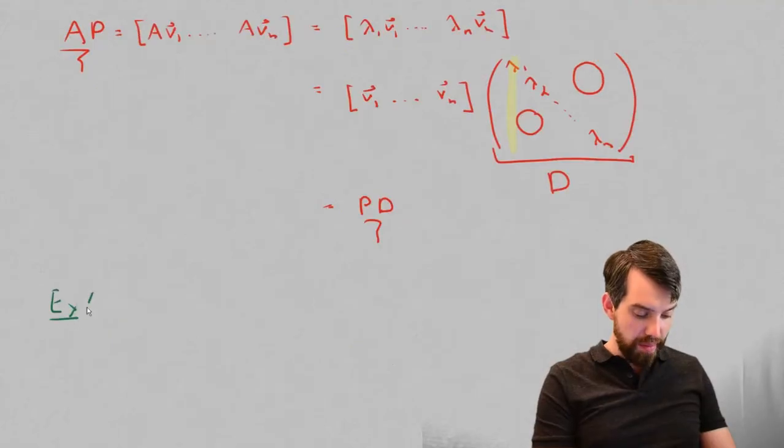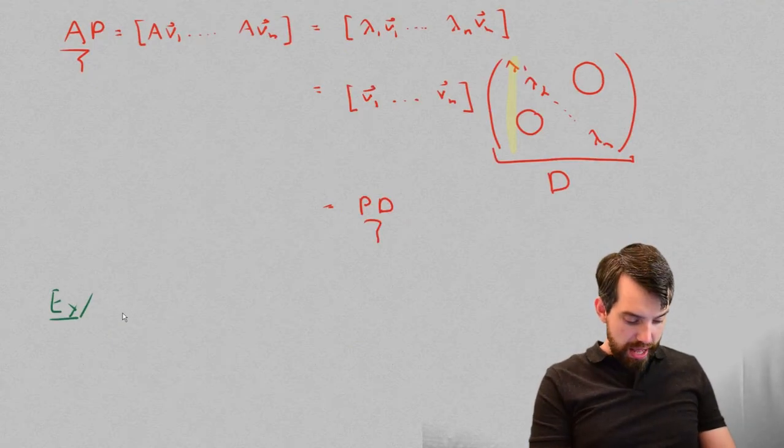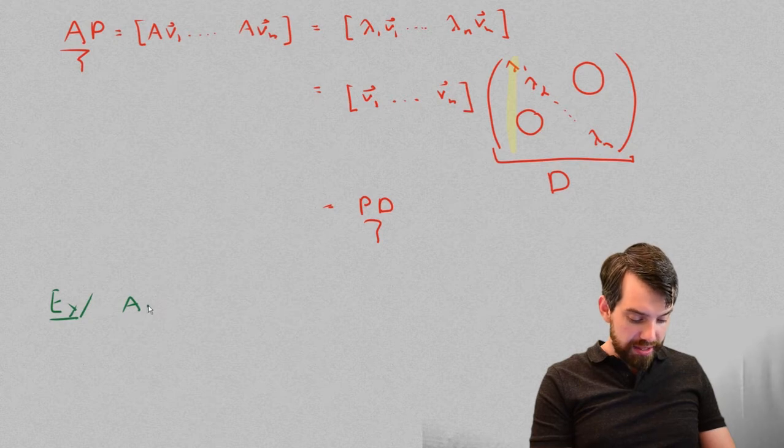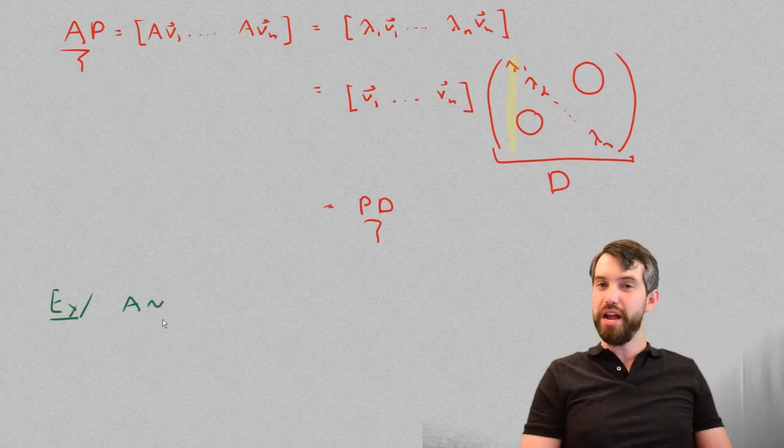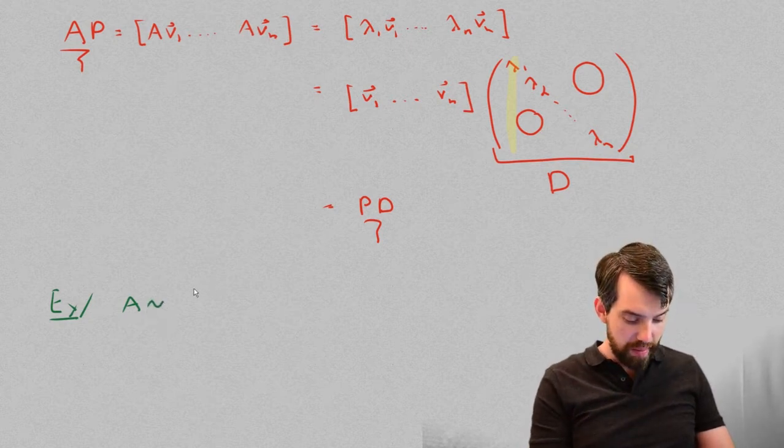Suppose I've got some matrix A here, and I know that it is similar. I'm going to use my tilde sign for similar. It's similar to a matrix.